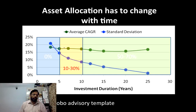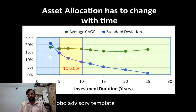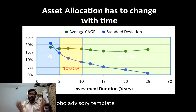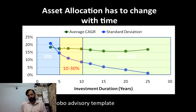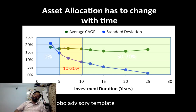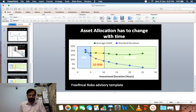You can use the Robo Advisory Template from FreefinCal, found on the main menu at FreefinCal.com, to come up with an asset allocation plan — a stepwise reduction in asset allocation — on your own. That's how you can look at risk and average return and define what is short-term and long-term. I will catch you again in 2019. Thank you. Bye bye.